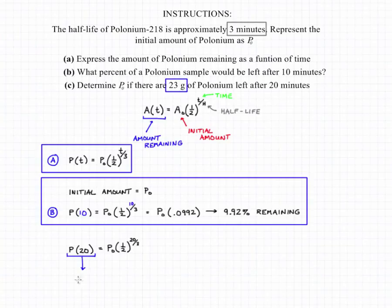So our final amount, our amount remaining, was 23 grams. We're trying to solve for P₀. So in this case that will be 23 equals P₀ times one-half raised to the 20 over 3, which will give us 23 is equal to P₀ times 0.00984.